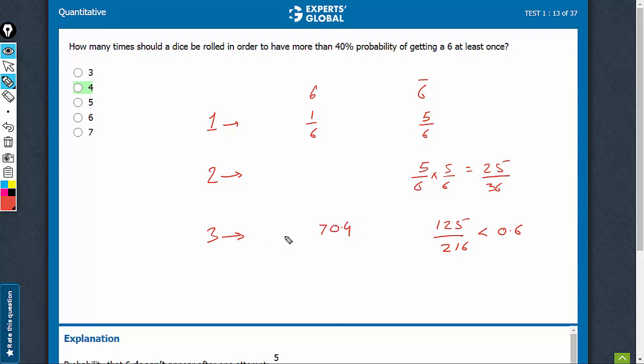So, three attempts are going to be sufficient. Don't worry about this. It's just a dummy answer. The right answer is option A.